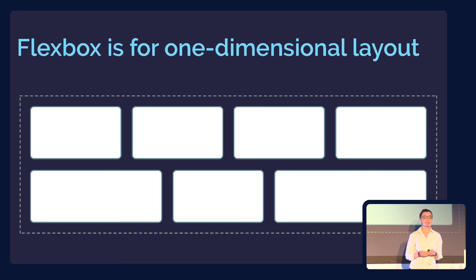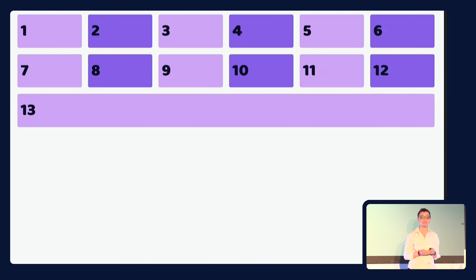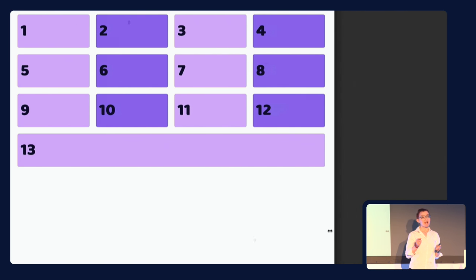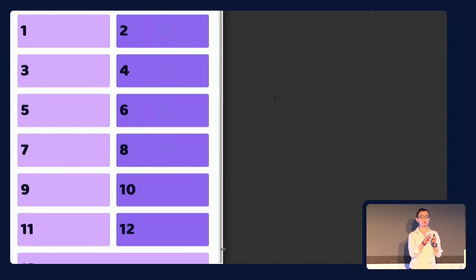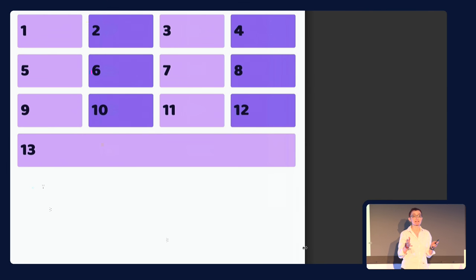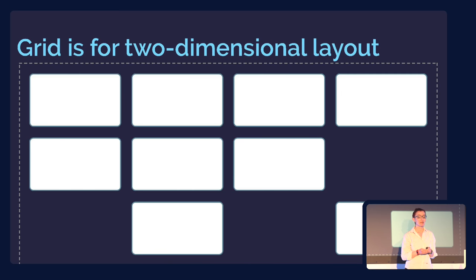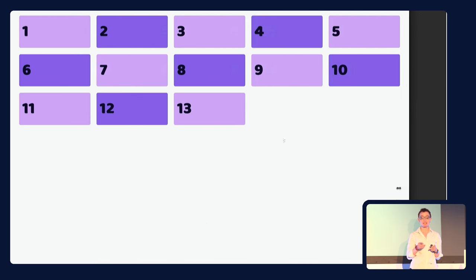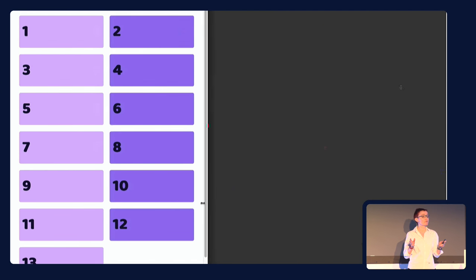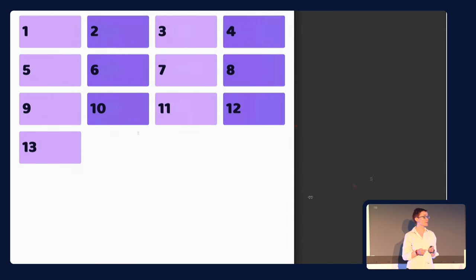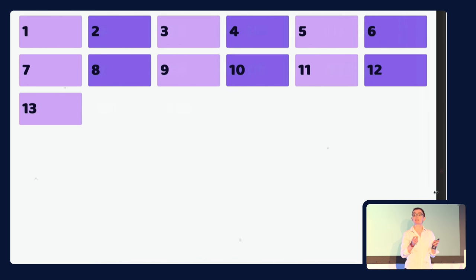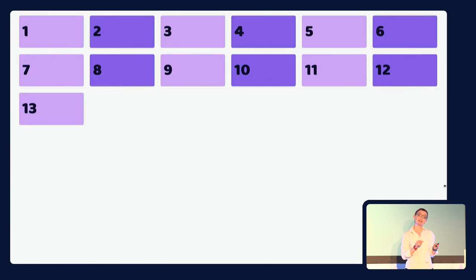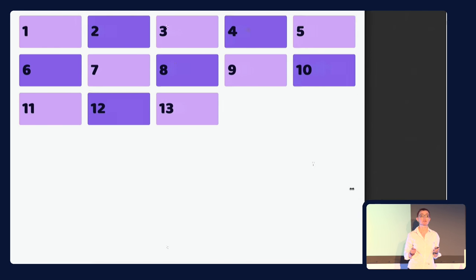The obvious difference is that flexbox is for one-dimensional layout — if you want to lay something out as a row or a column. In a flexbox example, as items wrap onto the final line, that bottom one will spread out because space distribution works across the individual row. Grid is two-dimensional — rows and columns at the same time. Items stay in their columns as the layout reflows. The moment you start breaking flexbox's flexibility by adding percentage widths, that's when you need grid.